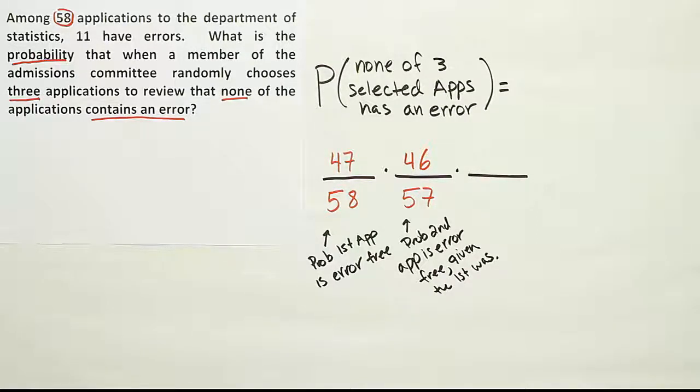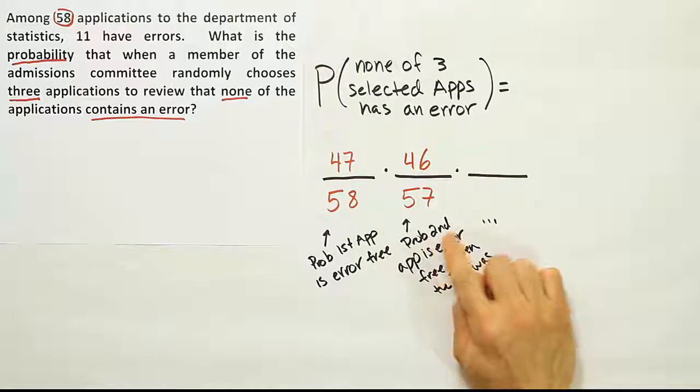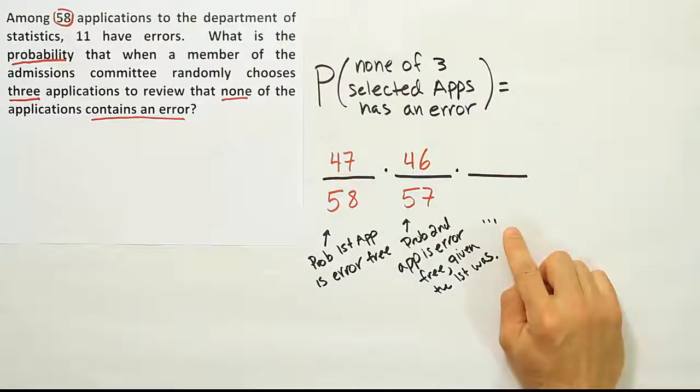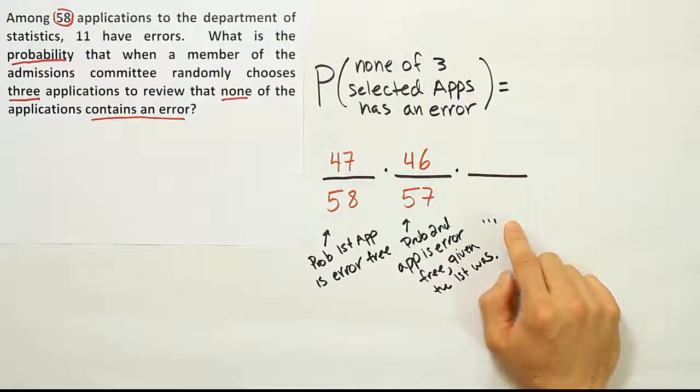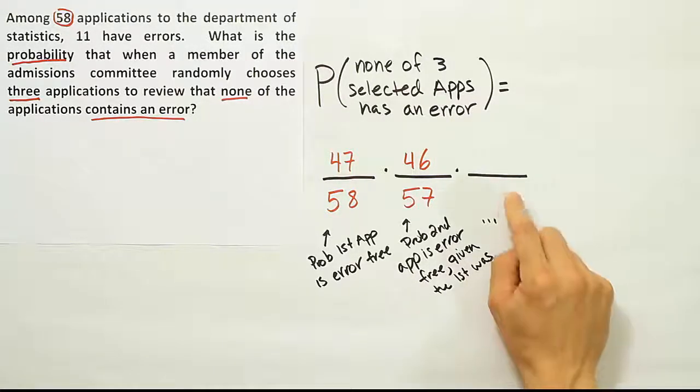And then finally, the last fraction. It should say the same thing, substituting the word third here. This would be the probability that the third application is error free, given that the first and the second were error free. So we're going to assume when the person goes back in to get that third application, he's going to reach in and grab an application that's error free.